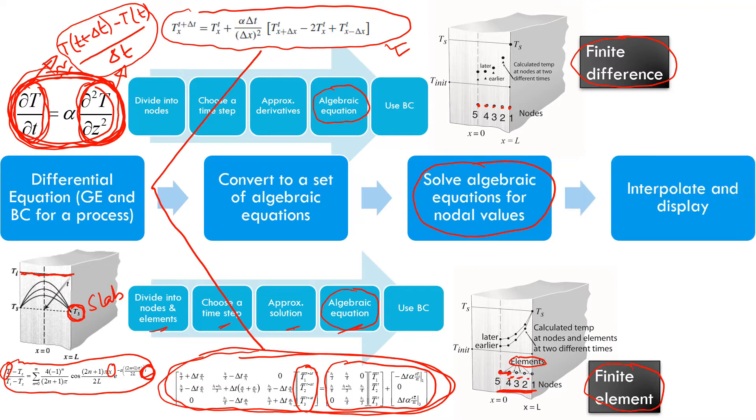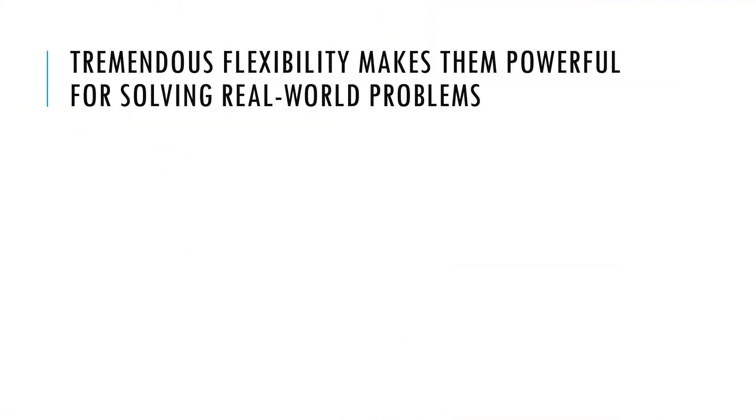And then, once you have solved this, then you interpolate. So in this finite difference, for example, you solve at the nodes, and if you need something in between, you interpolate. There is something similar here, except the interpolations are built in. But the main idea is, you now interpolate, and that gives you solutions everywhere. So you are able to solve this equation by changing it to a set of algebraic equations, and that gives you a lot of flexibility, which we will discuss in a second.